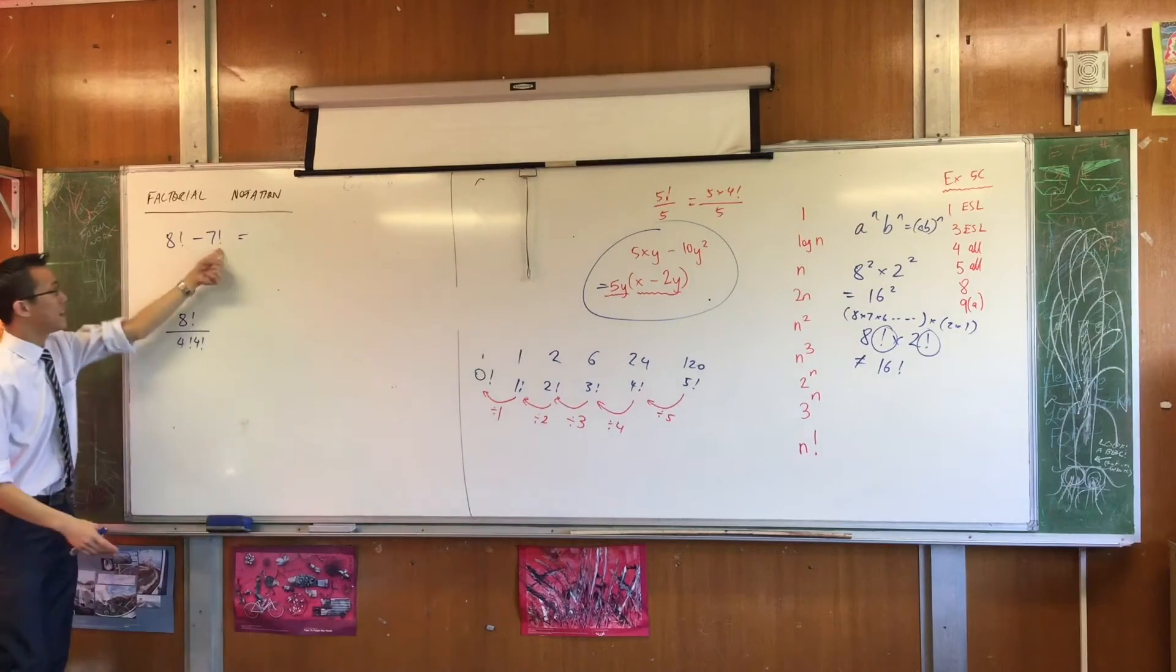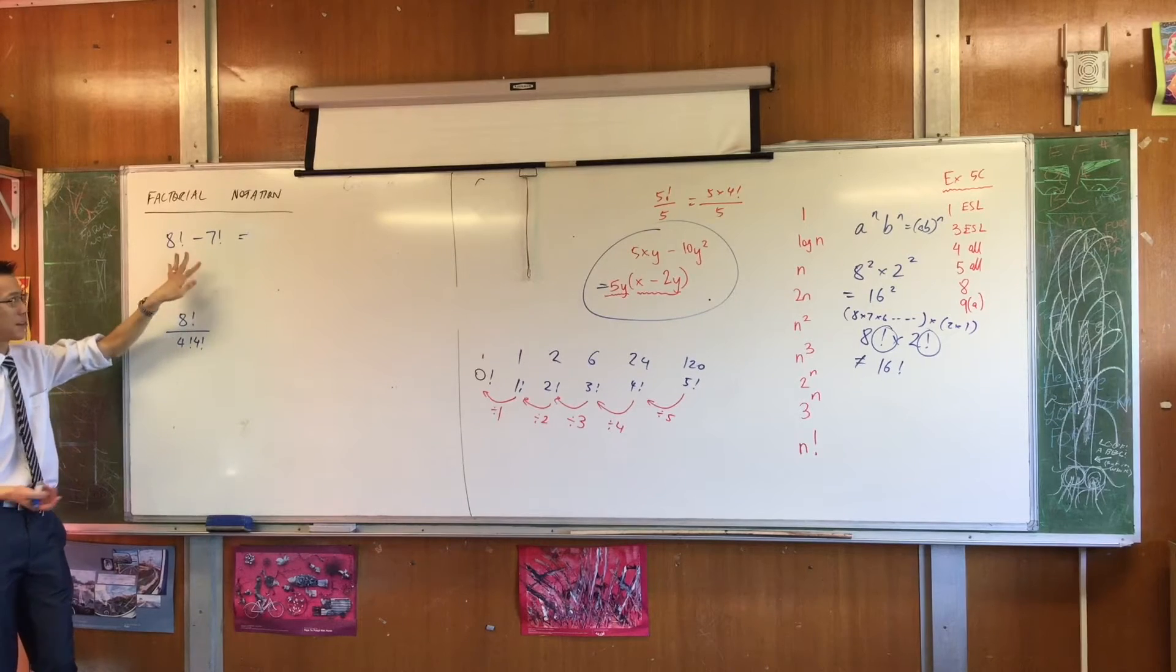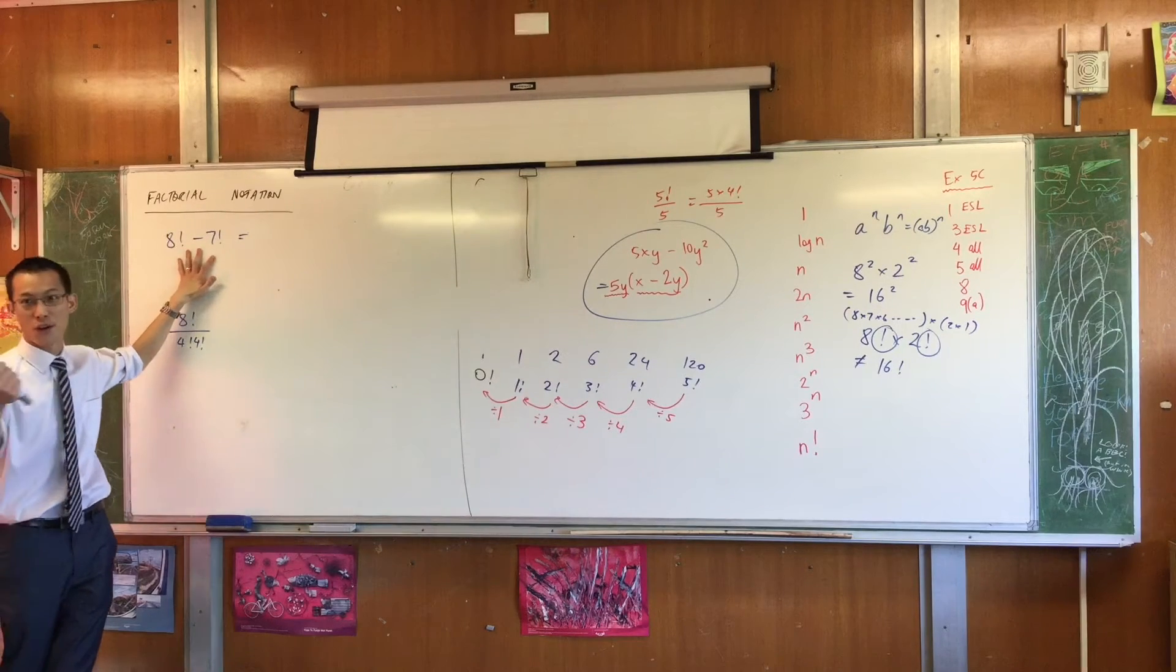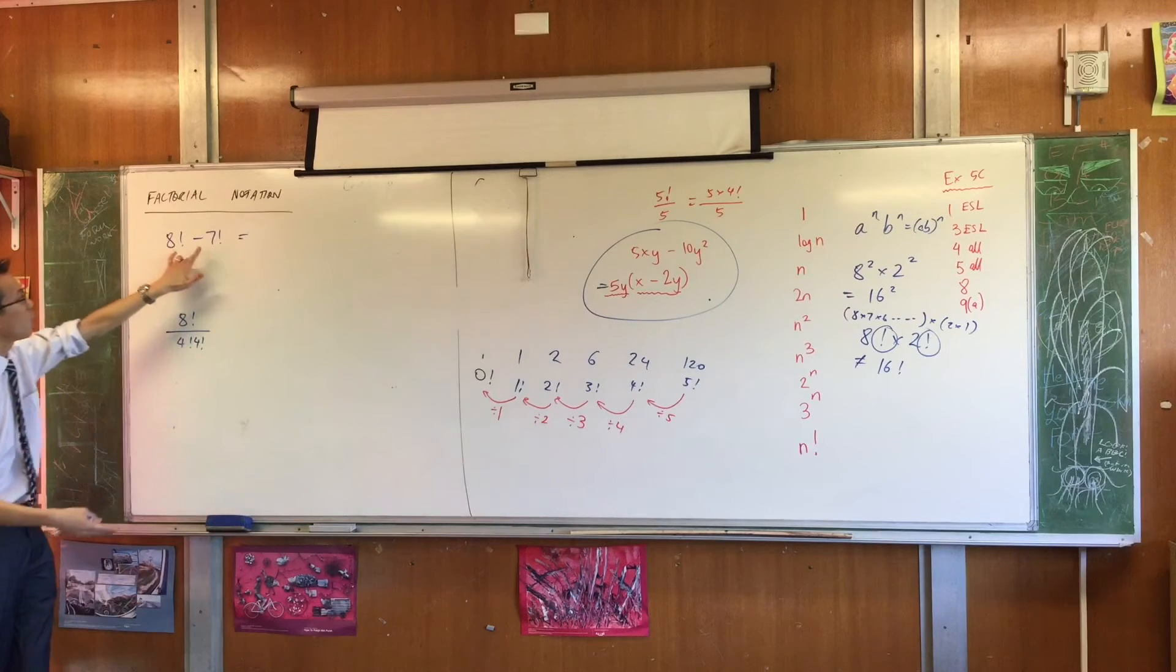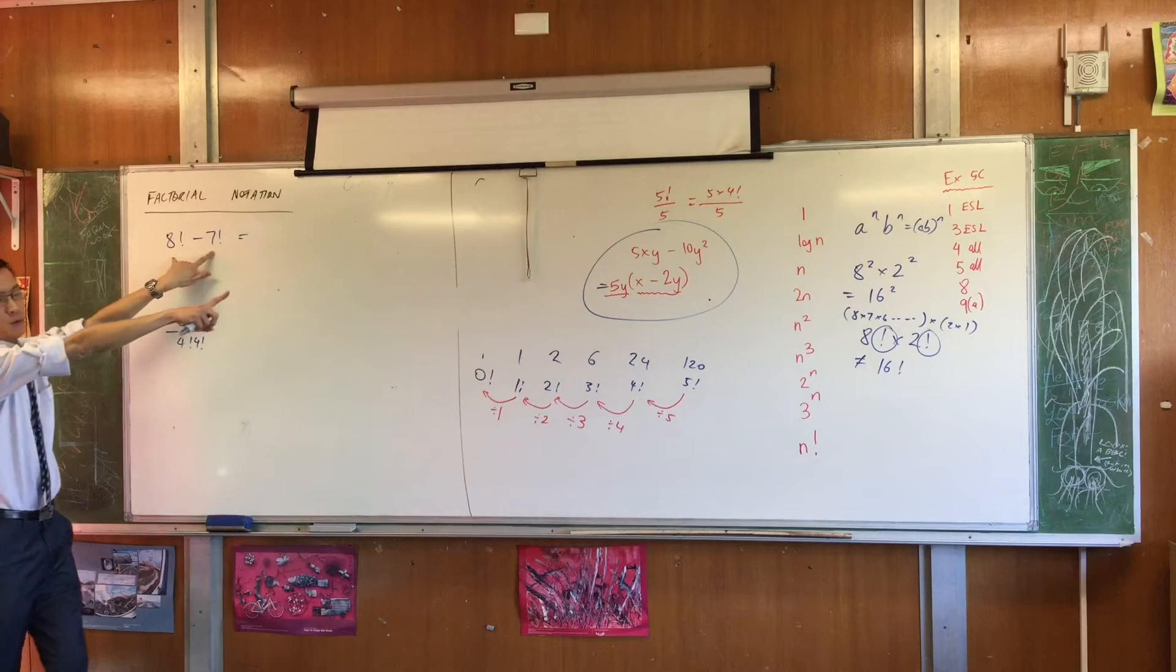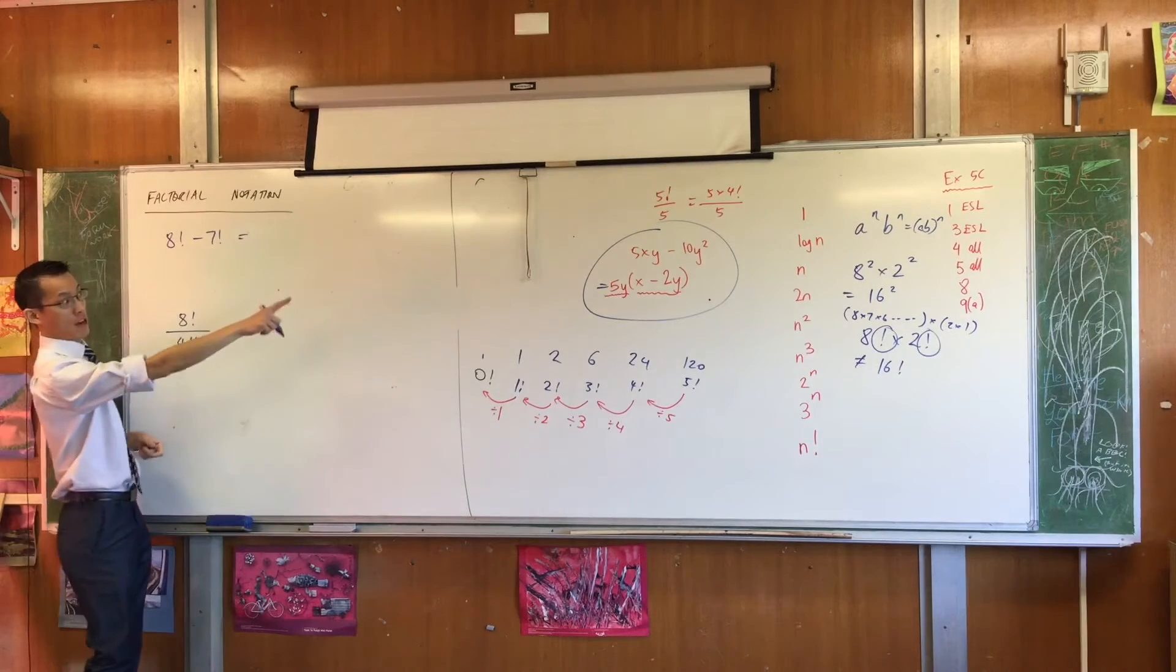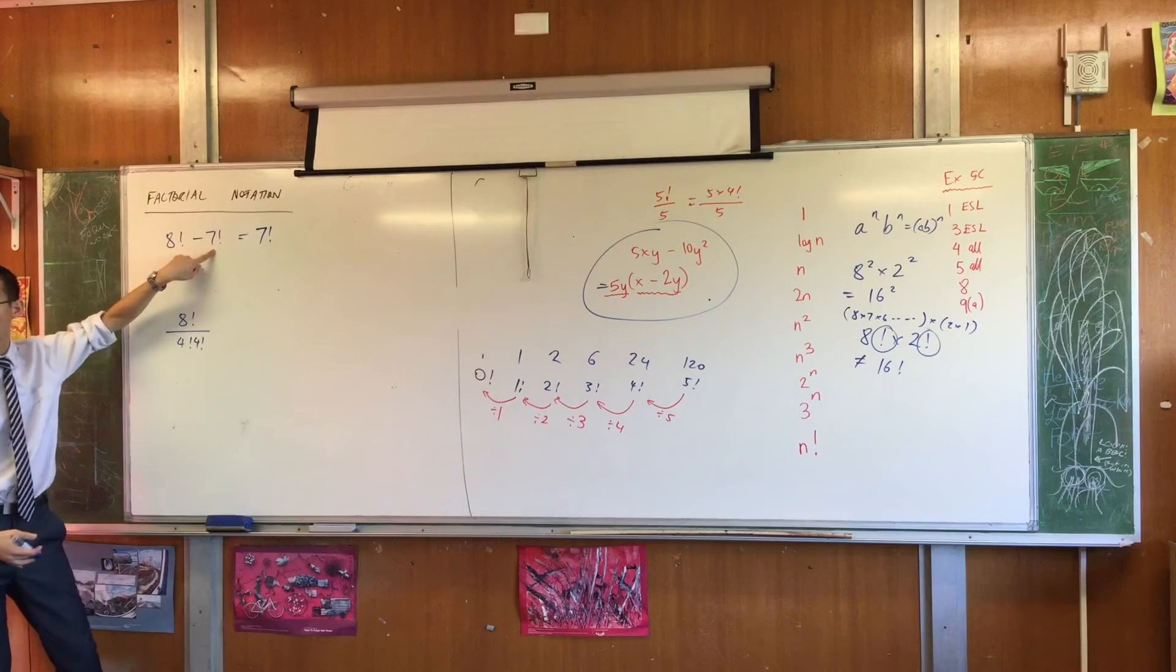Now in the same way, these guys have lots of common factors. For instance, because they're both factorials, 1 will be a common factor, and 2 will be a common factor, and 3, and 4, and 5, and 6, and all the way up to 7. Do you see that? So just like I pulled 5y out of that binomial in there, I can pull 7 factorial out of both of these terms.